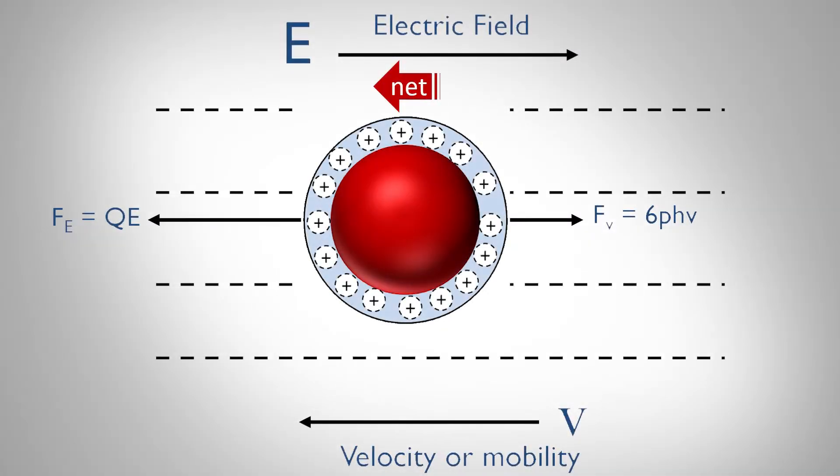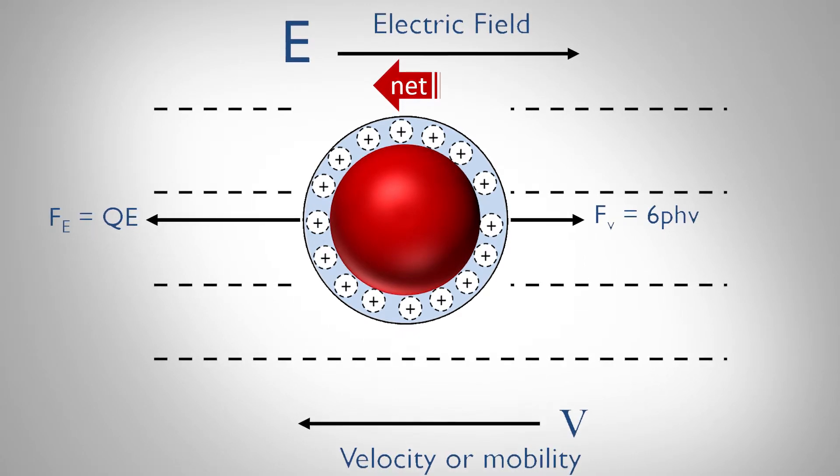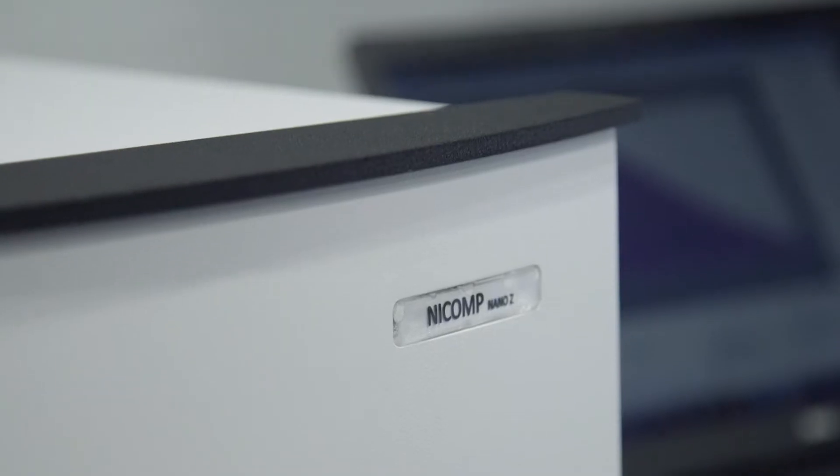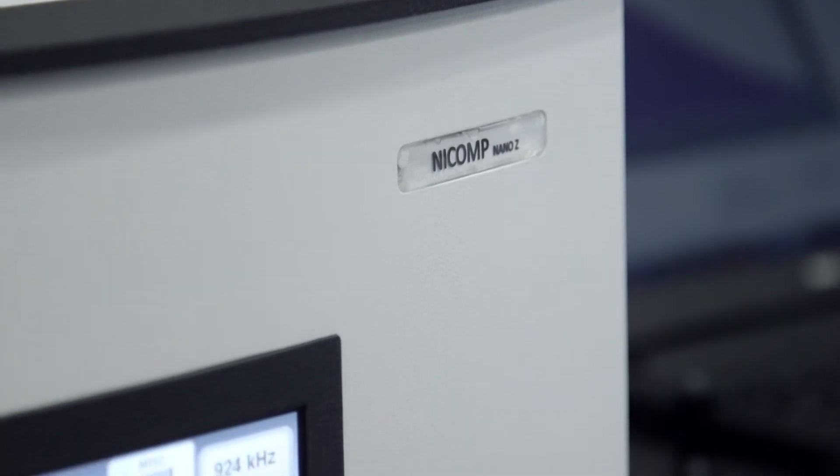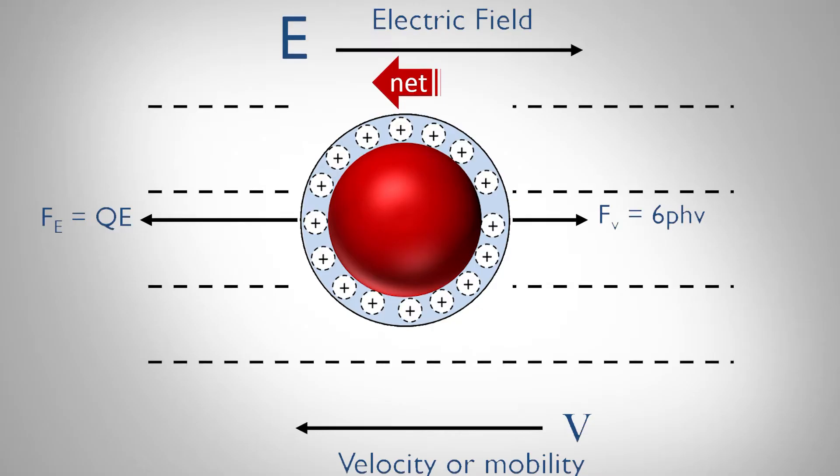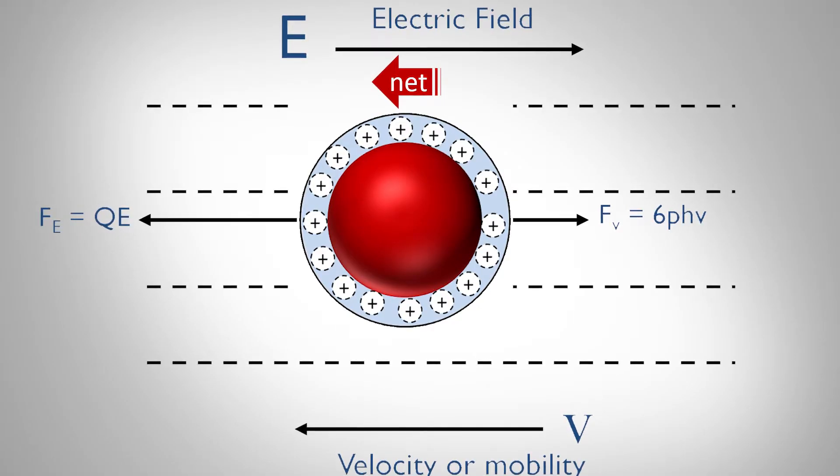The charge on the surface of particles, or the zeta potential, is measured by applying an electric field to the sample. The direction of the particle motion indicates if the charge is positive or negative, and the speed of the particles is used to calculate the magnitude of the charge.